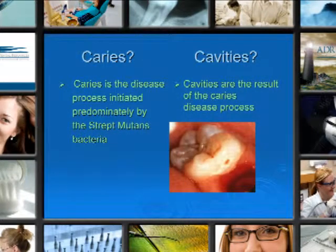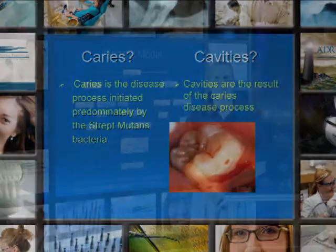Our plan and our process is based on two different modalities. One is caries, the other is cavities. Caries is the disease process initiated predominantly by the strep mutans bacteria, and cavities are the result of the caries disease process.